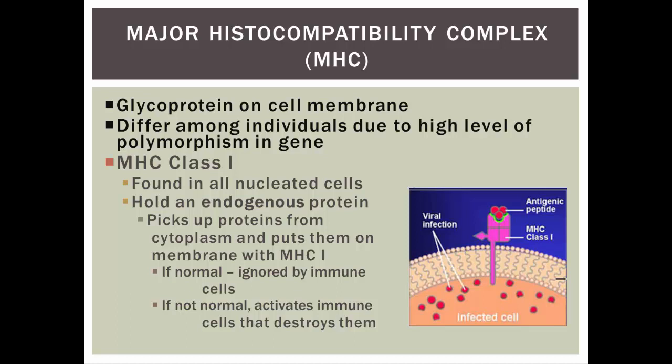MHCs come in two classes. MHC class 1 are found on all nucleated cells — these are basically the dog tags that separate self from non-self. They also hold endogenous proteins. Endogenous means 'within' — so these are proteins that are normally found inside the cell.